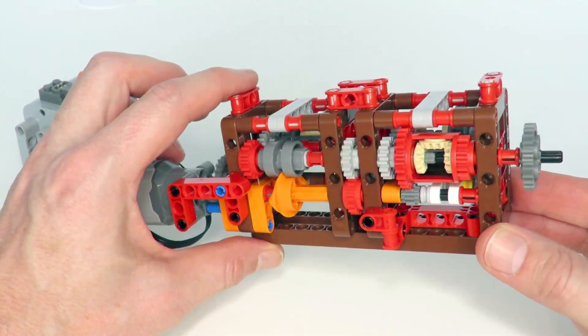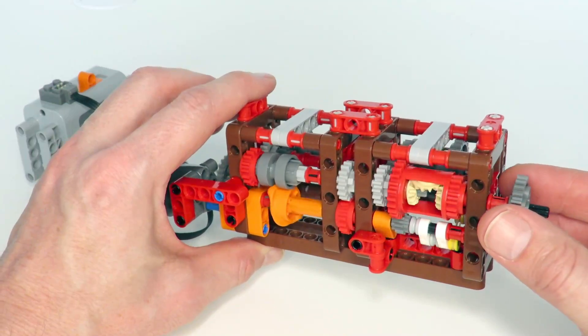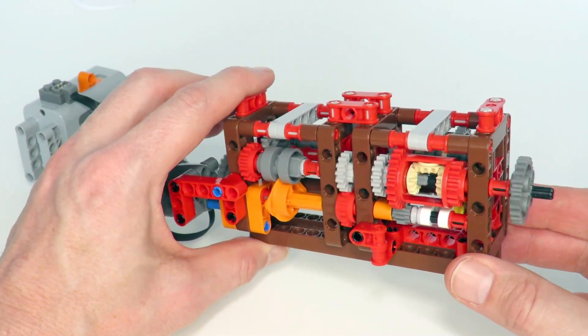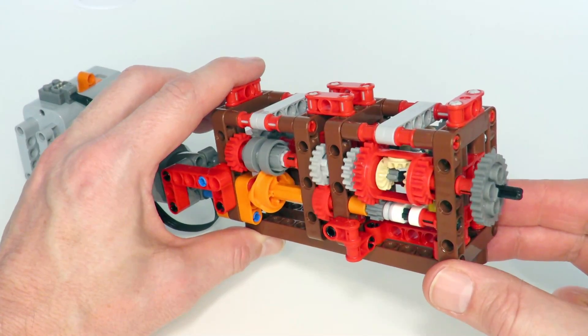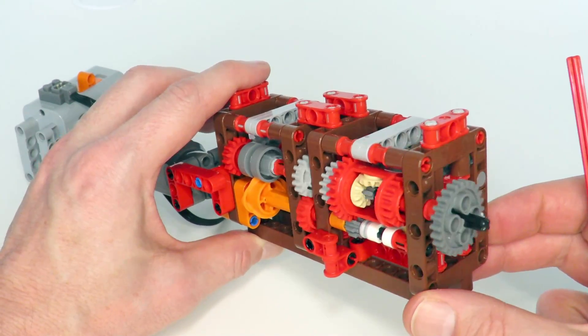So that is the explanation for the two-speed automatic gearbox. I hope you got something out of it and enjoyed this video. And if you'd like to support this channel, please like and subscribe. We'll see you next time. Thanks for watching.